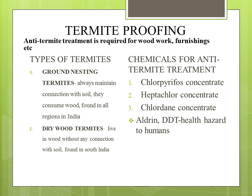Moving on to the next topic: termite proofing. We might have seen our woodwork and furniture damaged by white ants — these need to be prevented. Anti-termite treatment is required for wood and furnishing, generally termed as termite proofing. There are basically two types of termites: ground nesting termites and dry wood termites. Ground nesting termites always maintain connection with soil and are found in all regions of India. Dry wood termites live in wood without any connection with the soil. The commonly used chemicals are chlorpyrifos concentrate, heptachlor concentrate and chlordane concentrate. Chemicals like aldrin and DDT cause health hazards to humans and are not preferable.